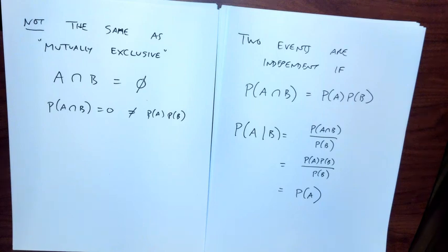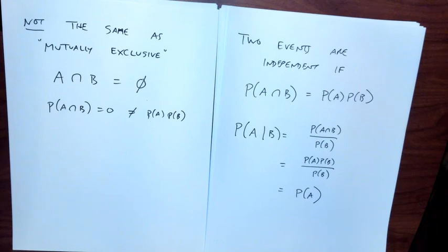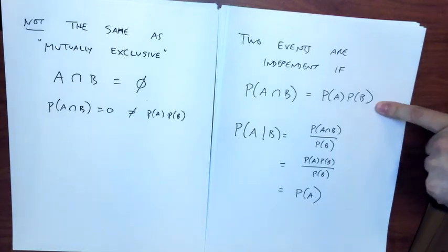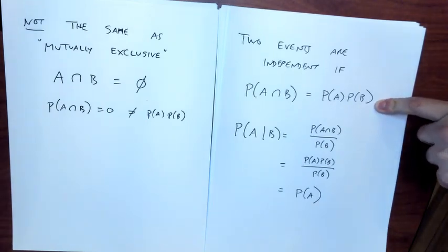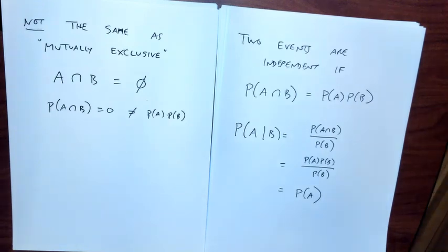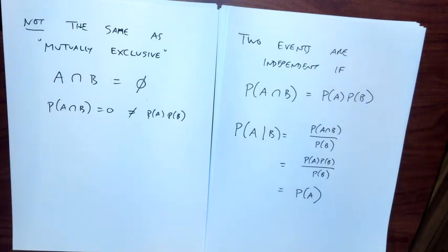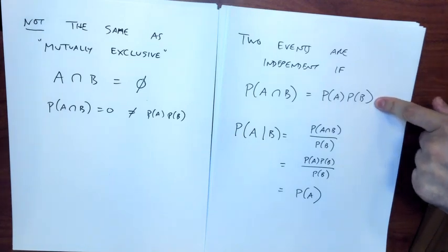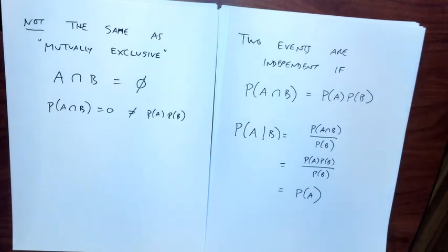The theme of the next homework is going to be testing whether given events are independent by verifying whether this property holds. Don't assume you can look at a pair of events and say they're independent. You do have to do the mathematical check to make sure that's true.